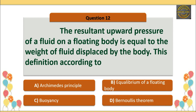Q12: The resultant upward pressure of a fluid on a floating body is equal to the weight of fluid displaced by the body — Option A is correct — according to Archimedes' principle.